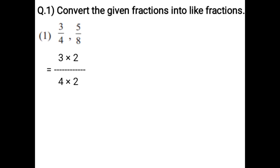3 upon 4, 5 upon 8. In the first fraction 3 upon 4, the denominator 4 goes into the table of denominator 8. You have to make the denominator equal. To make the denominator equal on first fraction 3 upon 4, you have to multiply 2 on numerator and multiply 2 on denominator. Then second fraction 5 upon 8, write as it is. That is equal to 3 × 2 = 6 upon 4 × 2 = 8. 5 upon 8 write as it is.